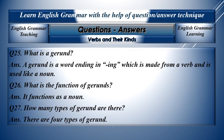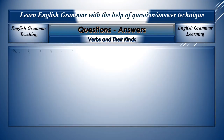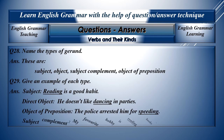Question number twenty-five: What is a gerund? A gerund is a word ending in -ing which is made from a verb. Question twenty-six: What is the function of gerunds? It functions as a noun. Question twenty-seven: How many types of gerunds are there? There are four types of gerunds: subject, object, subject complement, and object of a preposition.